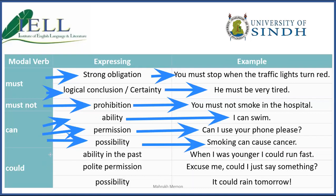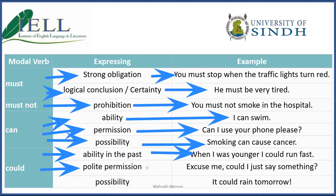Next is 'could.' Could is used for ability in the past: 'When I was younger, I could run fast' — this is my ability in the past. We use 'can' for present ability, 'could' for past ability — something I could do then that I can't do now. Could is also used for polite permission: 'Excuse me, could I just say something?' And for possibility: 'It could rain tomorrow.'